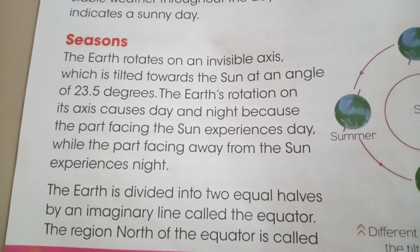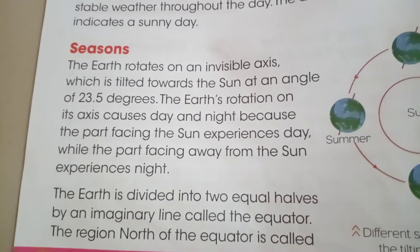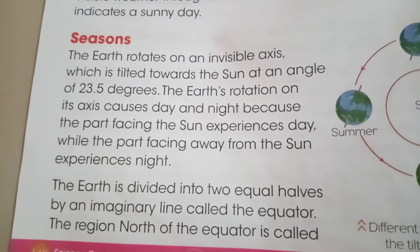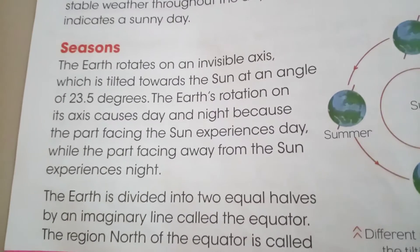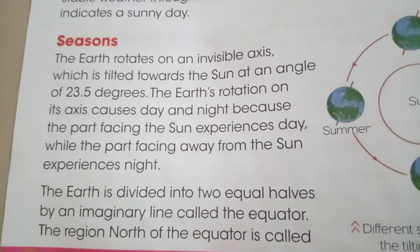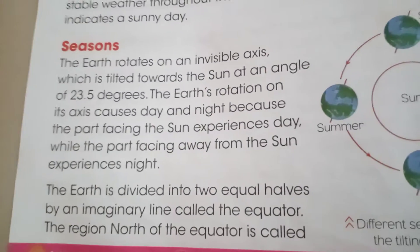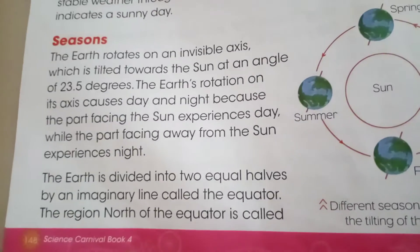You know that Earth rotates on its own axis, and when it rotates on its own axis it is called rotation. It rotates at an angle of 23.5 degrees, and with the help of this rotation, day and night are caused. The part facing the sun experiences day, while the part facing away from the sun experiences night.